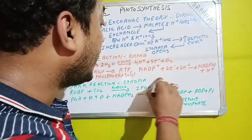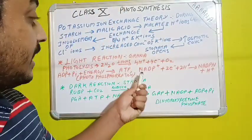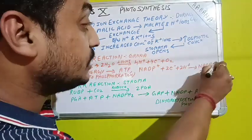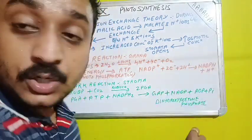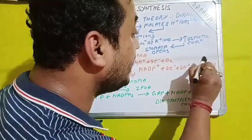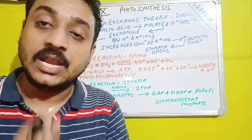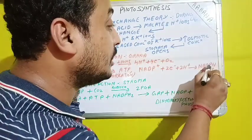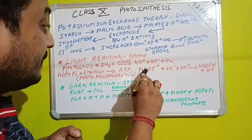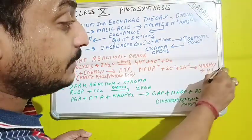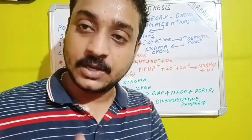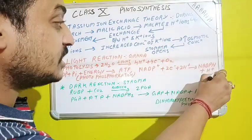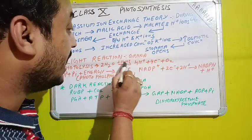NADP⁺ (nicotinamide adenine dinucleotide phosphate), in the presence of the electrons and hydrogen from photolysis, is reduced to form NADPH, liberating one H⁺ ion. So in the light reaction, NADP⁺ converts to NADPH and ADP converts to ATP. These two molecules — ATP and NADPH — will be utilized in the dark reaction.